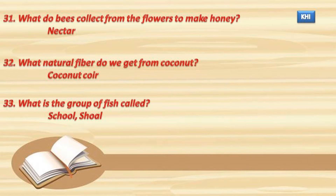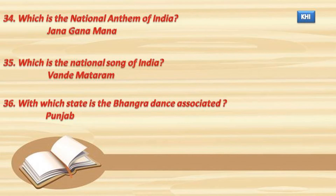32. What natural fiber do we get from coconut? Coconut coir. 33. What is a group of fish called? School, shoal. 34. Which is the national anthem of India? Jana Gana Mana.